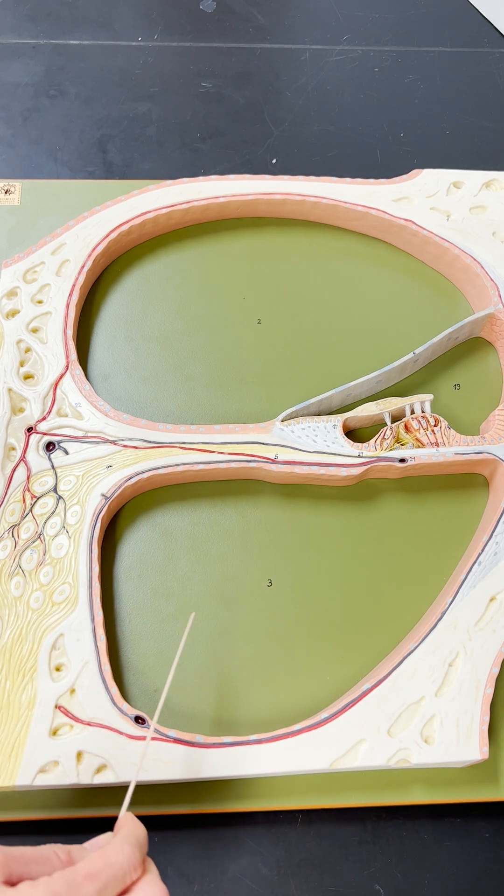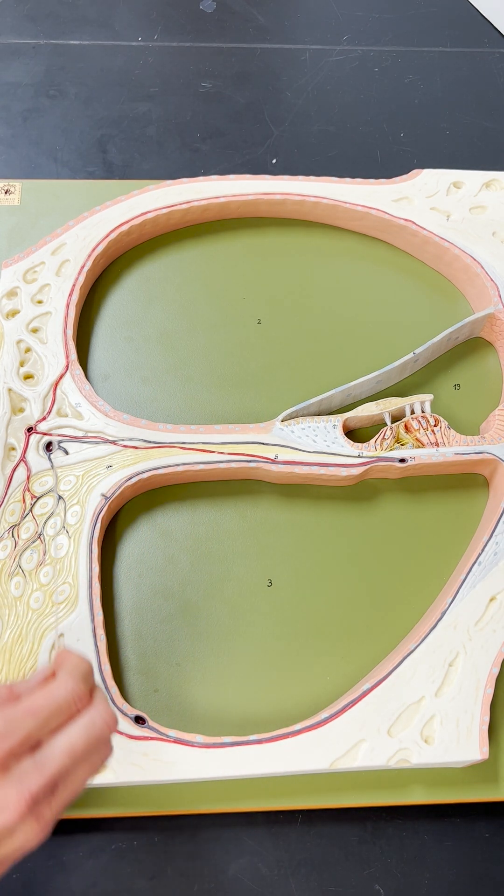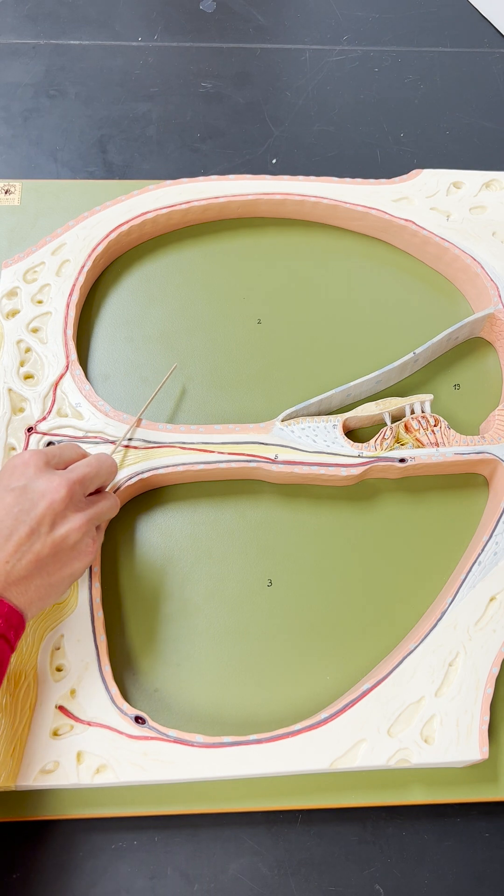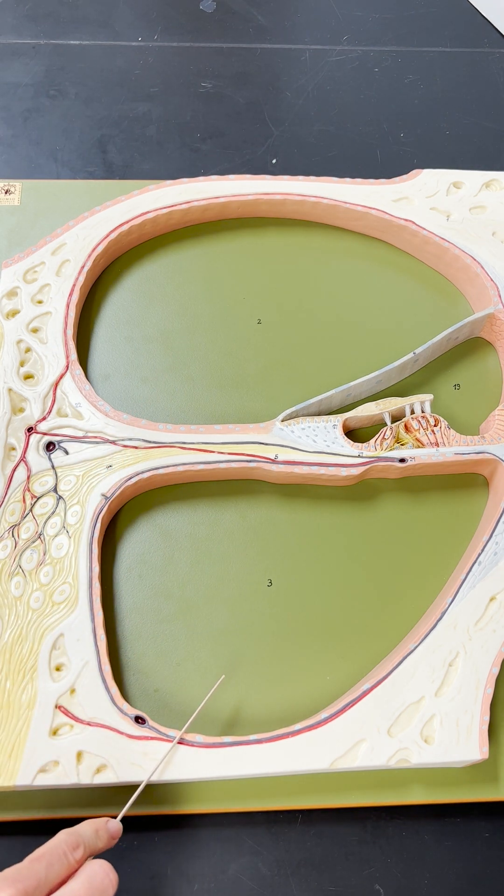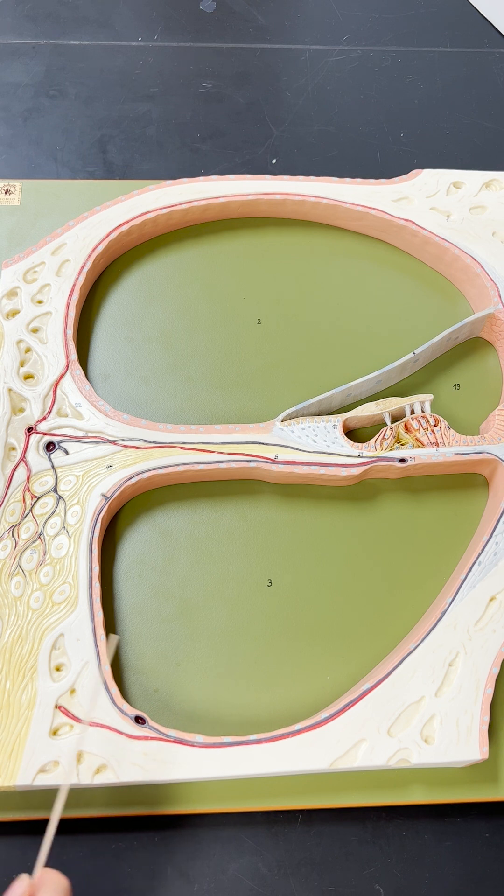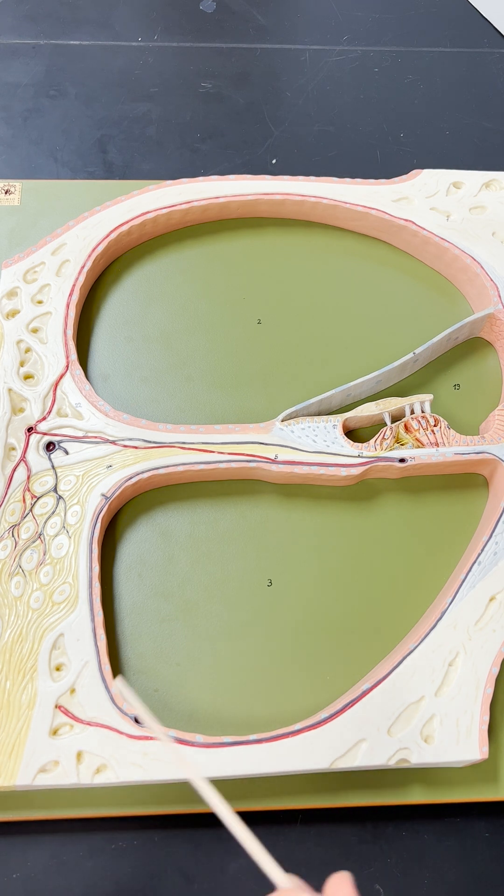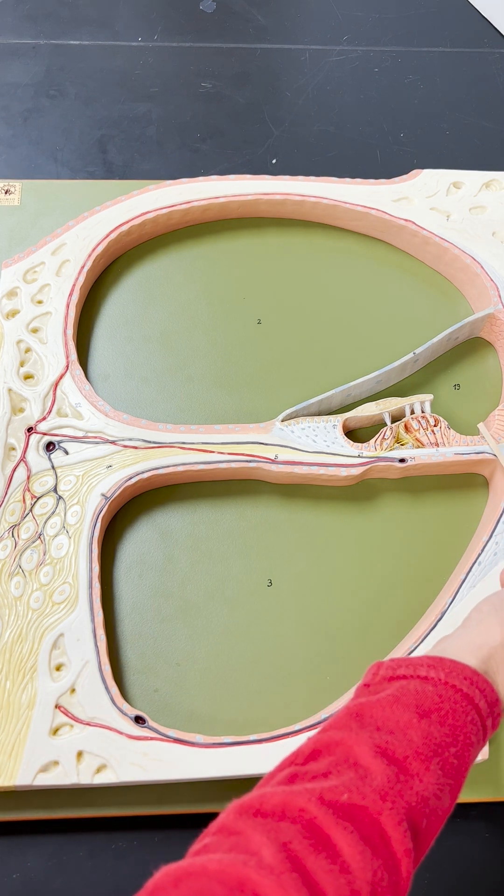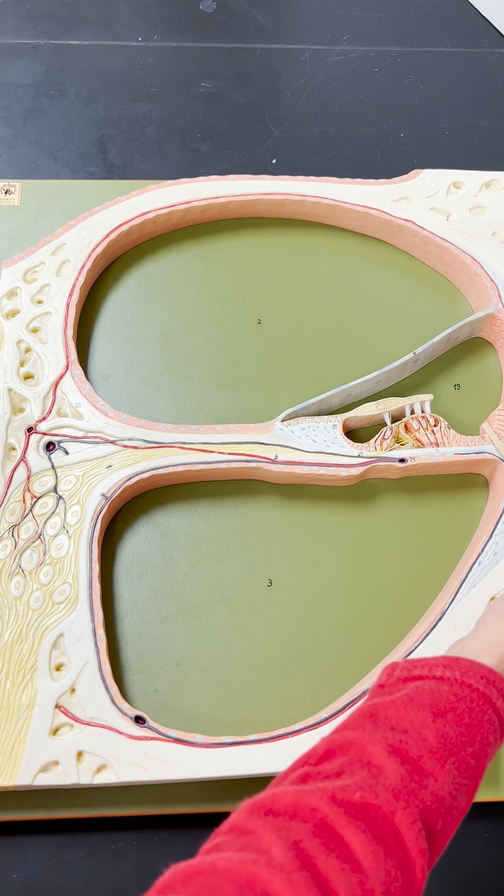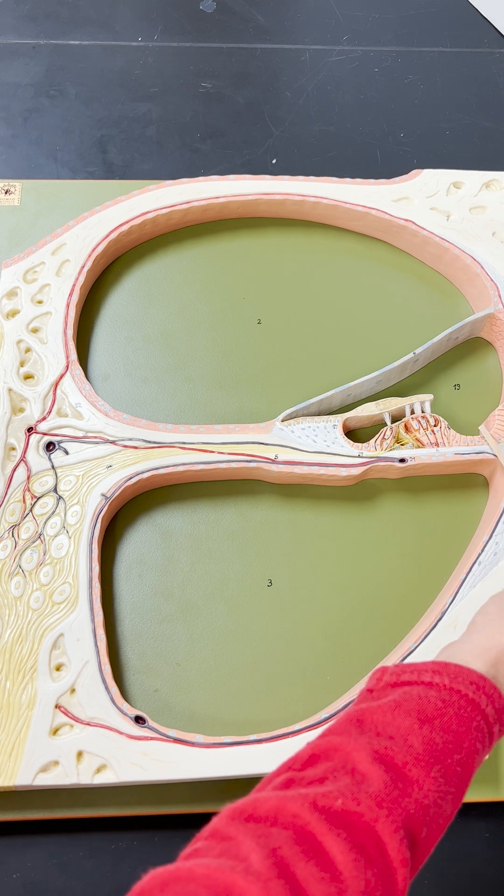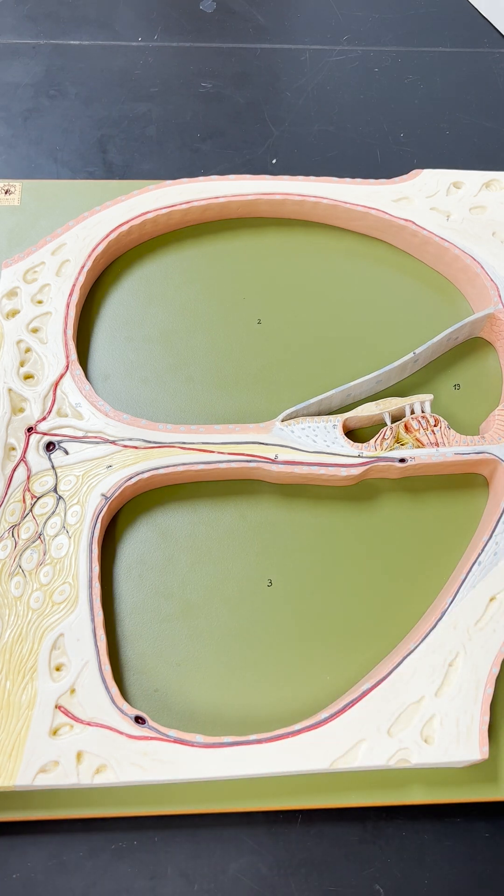These spaces each contain fluid. The scala vestibuli and the scala tympani both contain the same fluid, which is perilymph. Perilymph is more similar to cerebral spinal fluid. The fluid in the cochlear duct is called endolymph, which is more similar to intracellular fluid, so it's going to have a higher concentration of potassium ions.